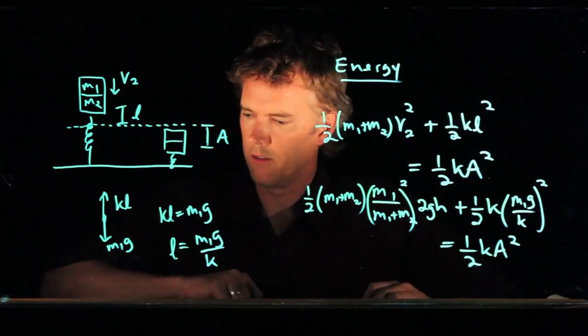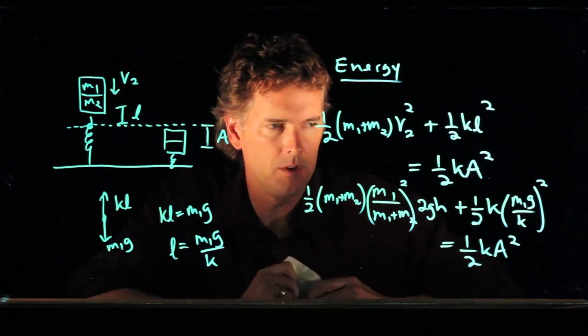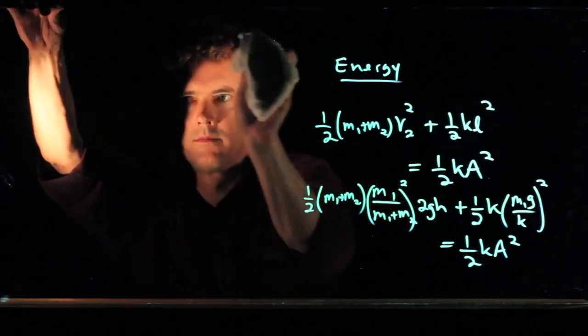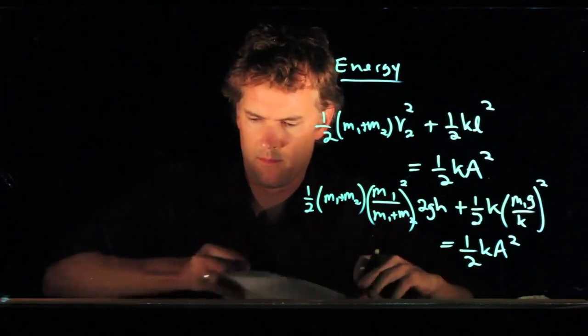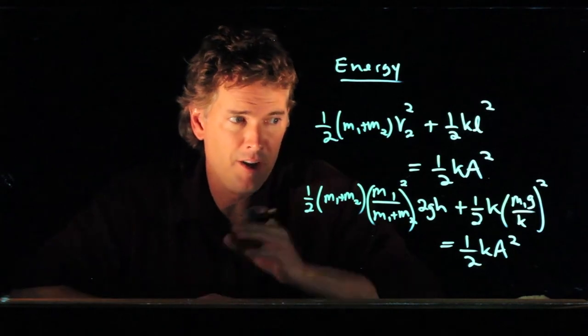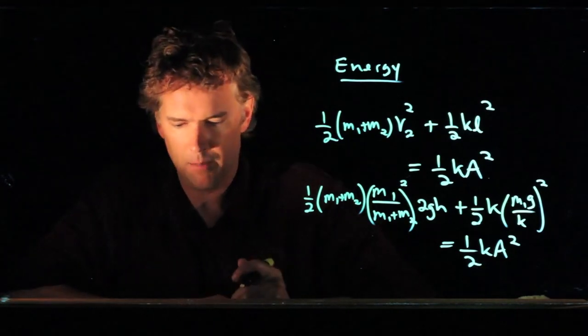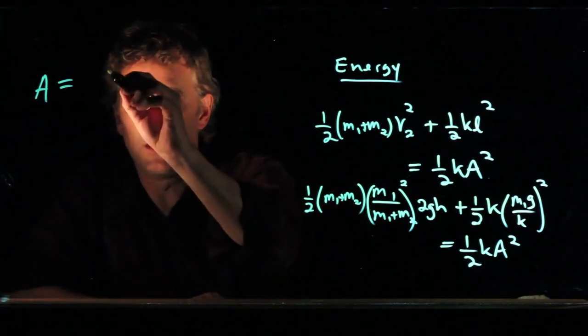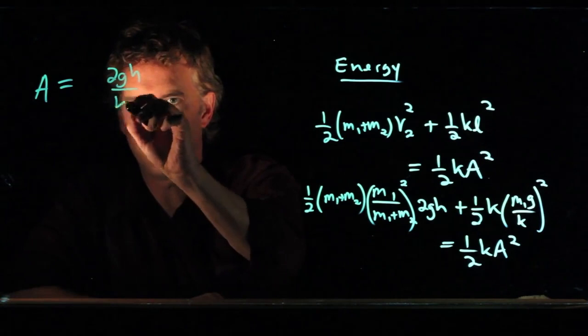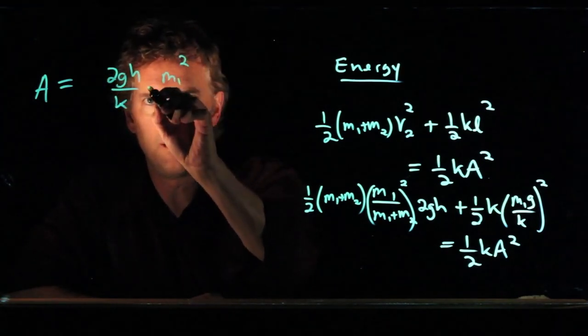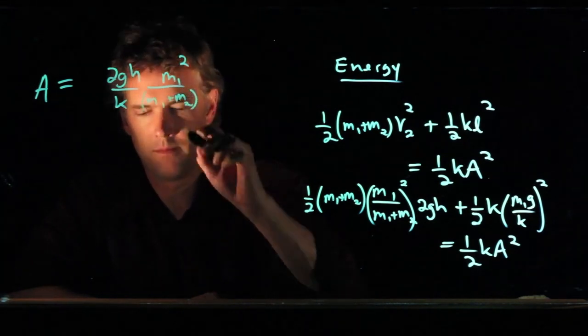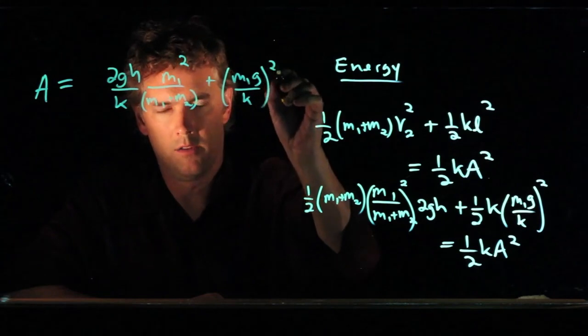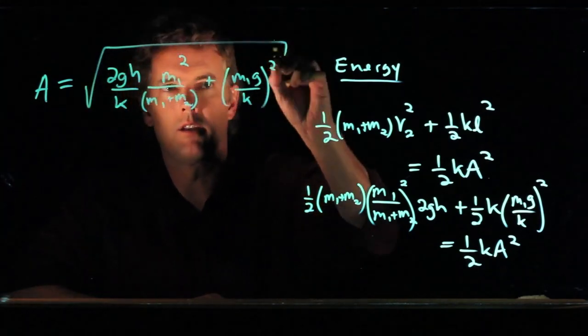And now the task is to solve this equation for the amplitude capital A. So I don't want to take away all your fun in doing the math, but I will tell you what I got so you can double check. I got A equals the square root of 2GH over K times M1 squared over M1 plus M2, plus M1 G over K squared, and then that entire thing square rooted.